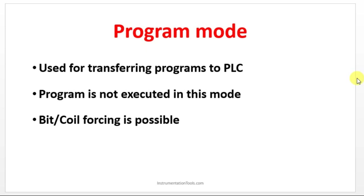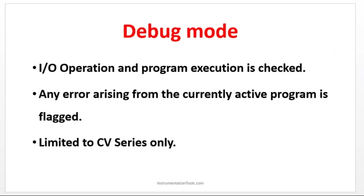In debug mode, you can check the I/O operation and program execution. If you have written 100 rungs of logic and want to check for any errors or anything you have missed, you can go to debug mode. It acts like a compiler where you can see where a fault has occurred before entering the exact execution stage. Debug mode is essentially the compiler mode.